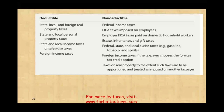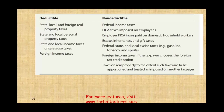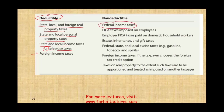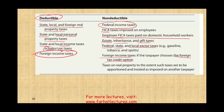Here is a list of what's deductible and what's not — this could be a question on the CPA exam. Deductible: state and local foreign real property taxes, state and local personal property taxes, state and local income taxes, or sales/use tax, and foreign income tax. Not deductible: federal income tax, FICA (employer and employee), employer FICA on domestic household workers, state inheritance and gift taxes, federal/state/local excise taxes (gasoline, tobacco, spirits), and foreign income taxes if the taxpayer chooses the foreign tax credit option instead.